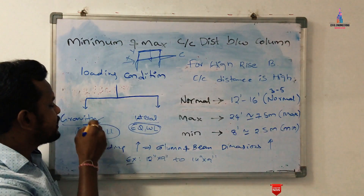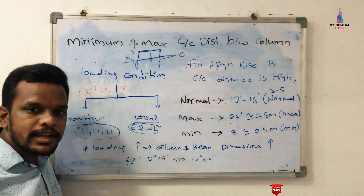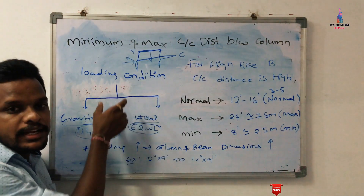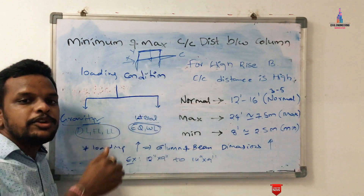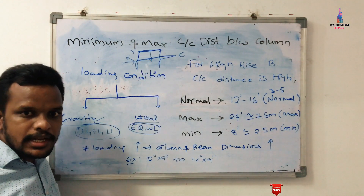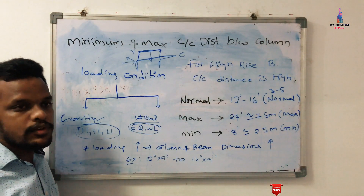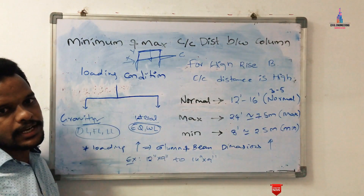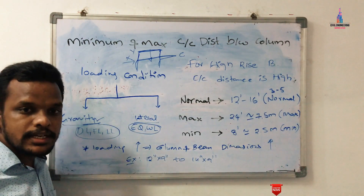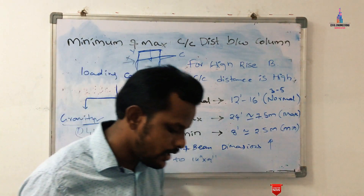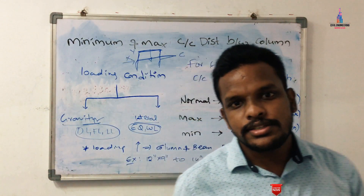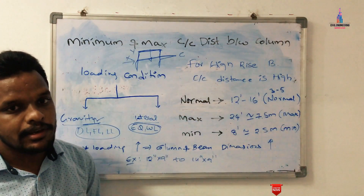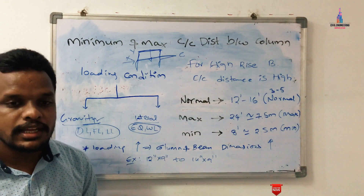Due to lateral and gravity loading conditions, the center-to-center distance between columns will vary. If you consider a higher intensity of loading on the structure, you need to provide a lesser center-to-center distance for the column section in order to resist all the load from gravity and lateral loading. For high-rise structure building design, we follow specific design considerations.